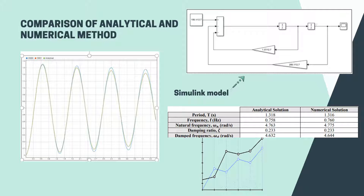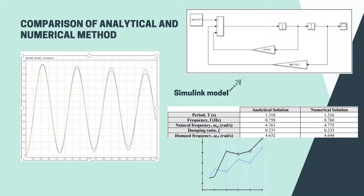For the first part, we generated an equation for a bow without the stabilizer and developed an ODE solution to use as a guideline for the MATLAB coding as the analytical method. We also simulated a block diagram for the numerical method. Based on our findings, between ODE1 and ODE8, ODE1 is much closer in value to the analytical solution, so ODE1 was used for comparison in the second part of the experiment.